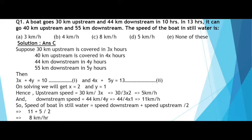Downstream speed = 44 divided by (4 × 1) = 11 km/hr. Now using the formula: speed of boat in still water = (speed downstream + speed upstream) divided by 2 = (11 + 5) divided by 2 = 8 km/hr. So the speed of the boat in still water is 8 km/hr. The answer is option C.